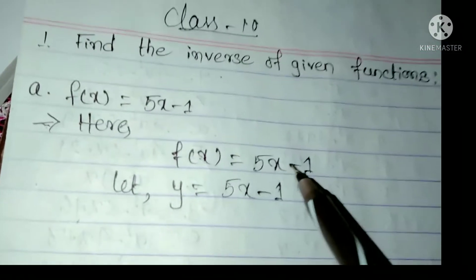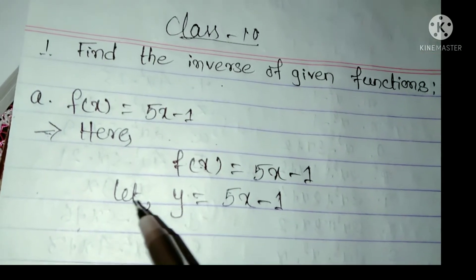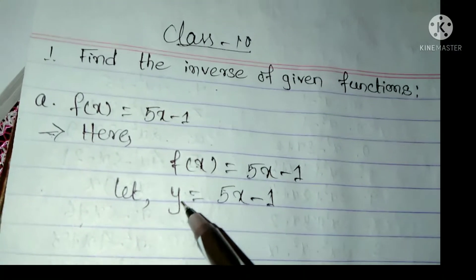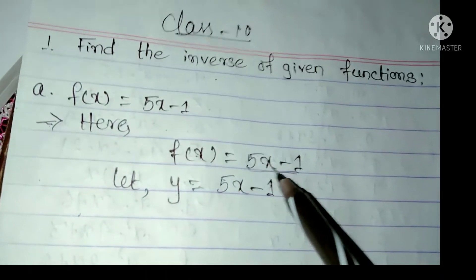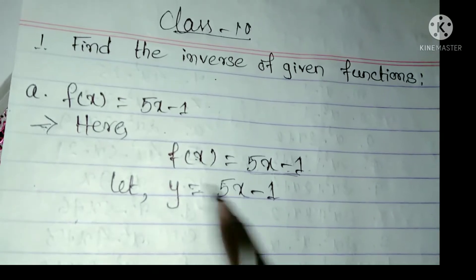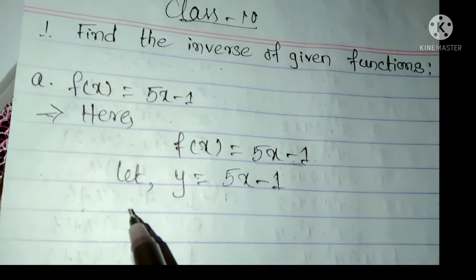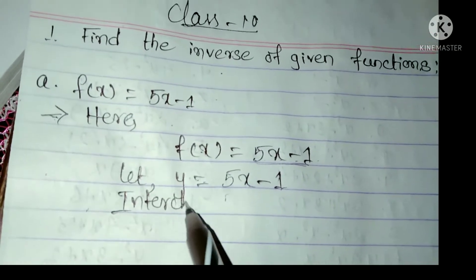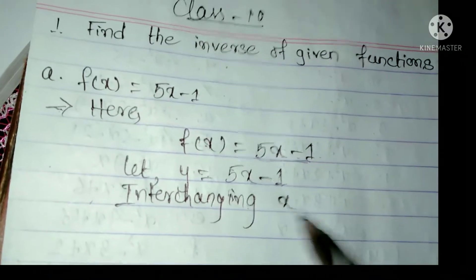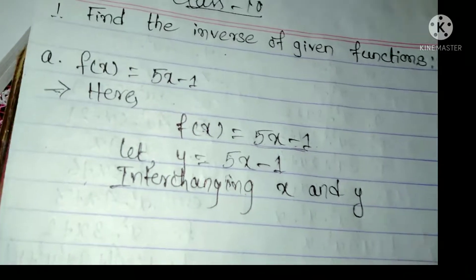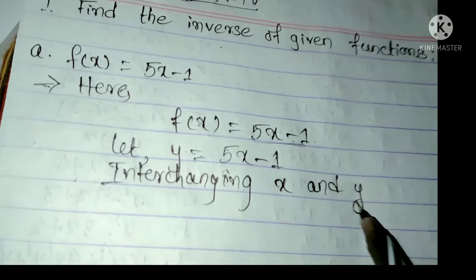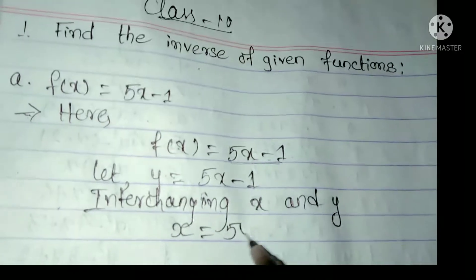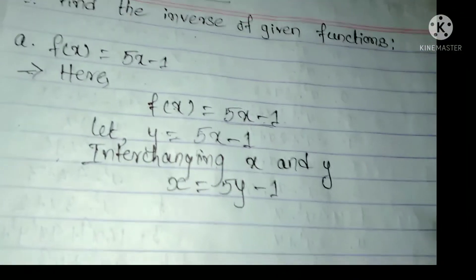Our given question is f(x). Just to find the inverse, the first step is: let y equal to the given function, which is 5x minus 1. The second step is: interchange x and y. That means where x was, put y, and where y was, put x.